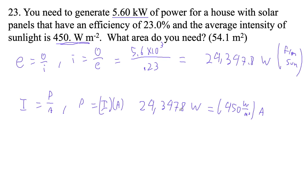Now I can just divide this. If you divide watts by watts per square meter, you get square meters. So this guy divided by 450 is 54.1.